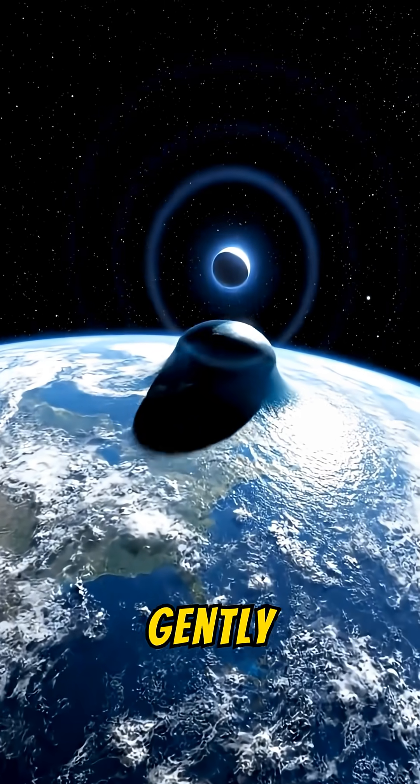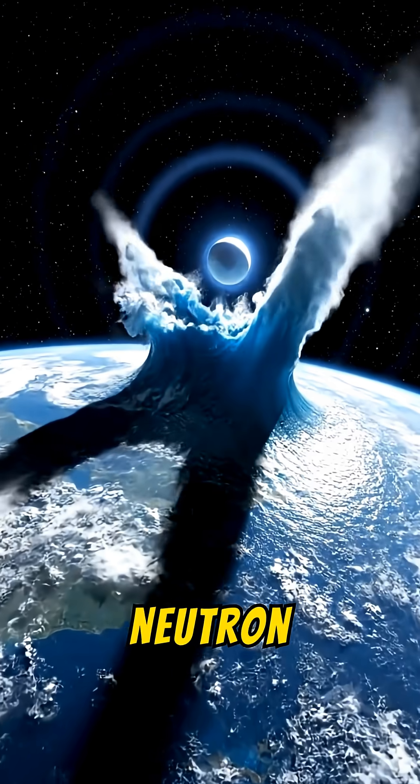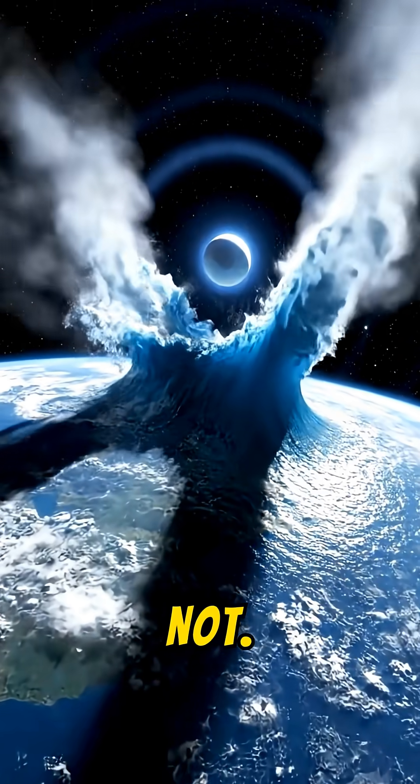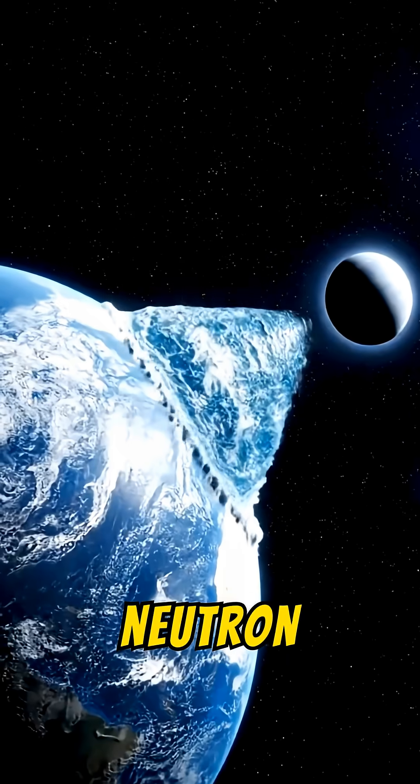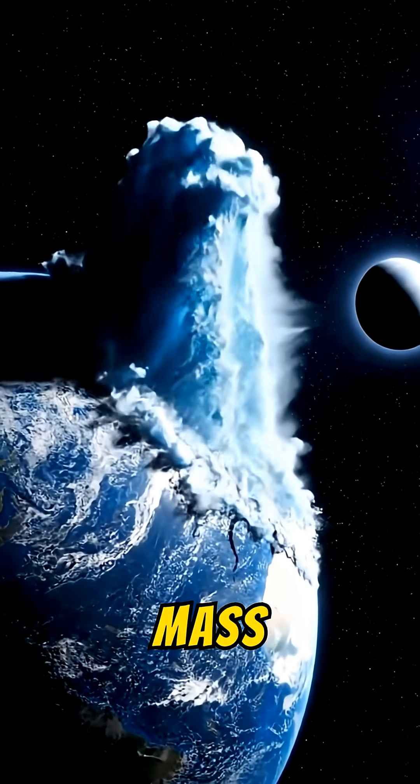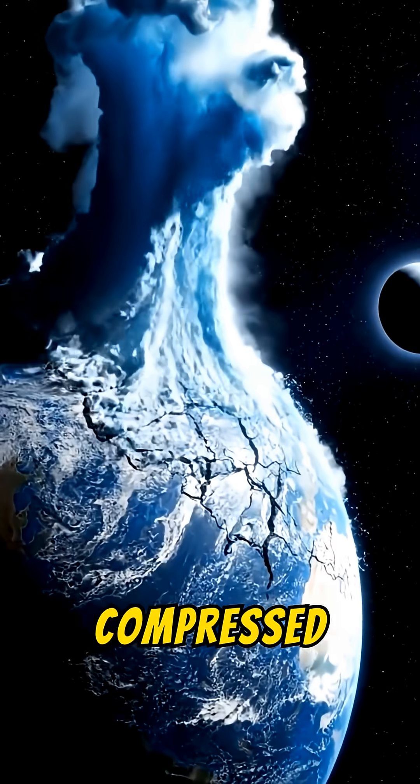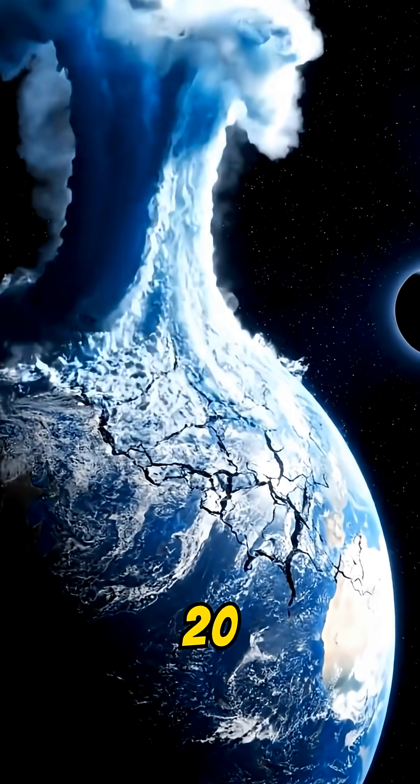The Moon has a mass small enough to gently pull our oceans. A neutron star does not. If the Moon were suddenly replaced by a neutron star with the same orbit, its mass would be greater than the Sun, compressed into a sphere just 20 kilometers wide.